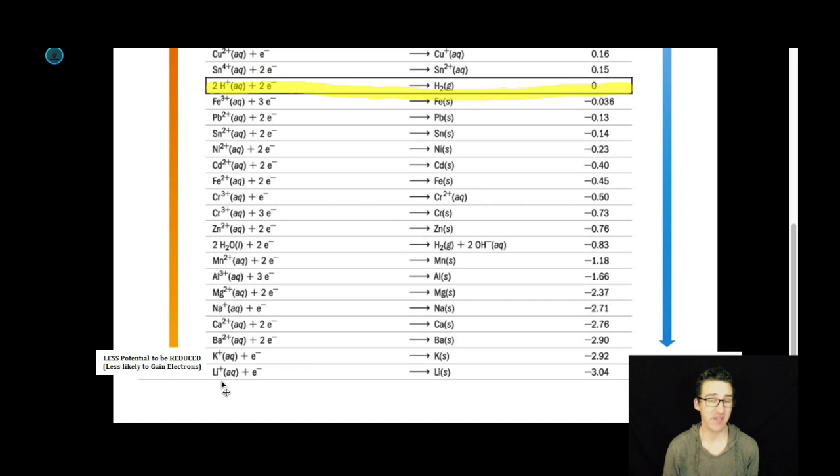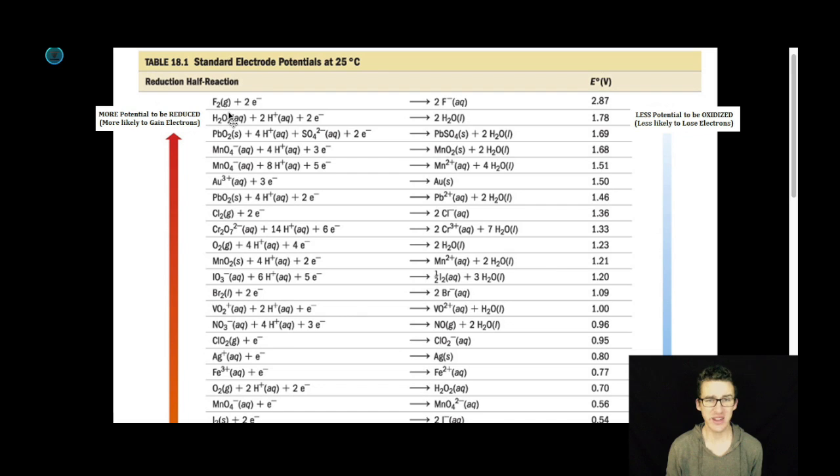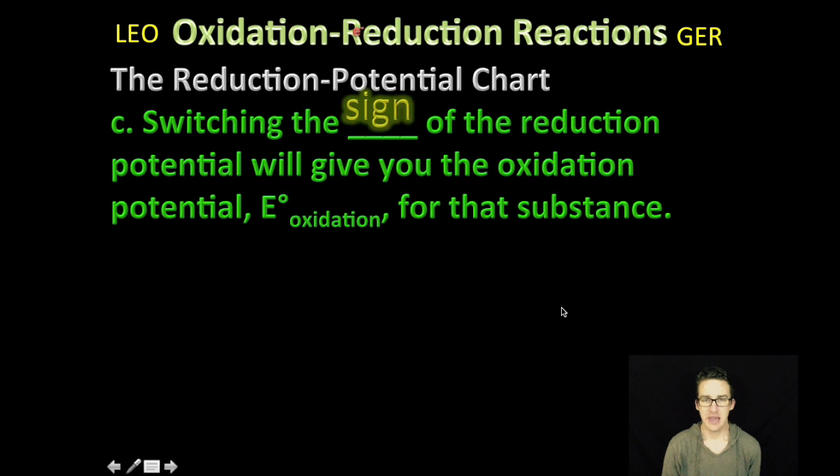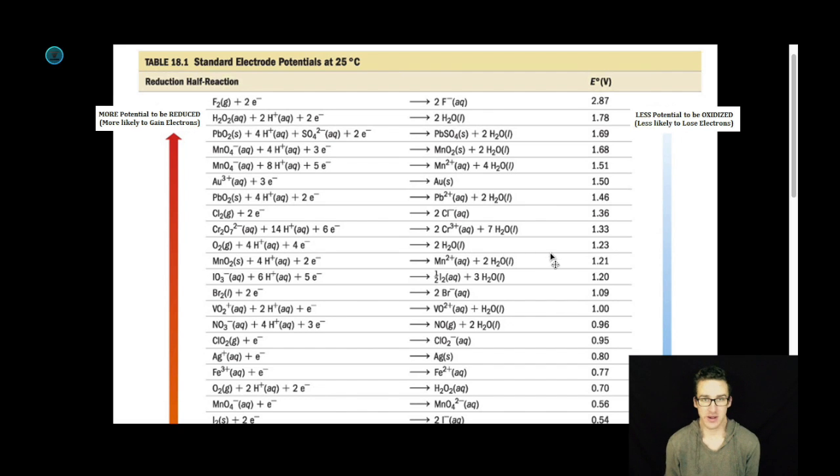So it's like saying, yo, lithium, you have like no potential in life to be reduced. Fluorine, you have so much potential. And then it's also important to note that switching the sign of the reduction potential will give you the oxidation potential, or this E-sub oxidation for that substance. So that's important. Even though we're often going to be given the standard reduction potentials, it also tells you the potential for a substance to be oxidized.